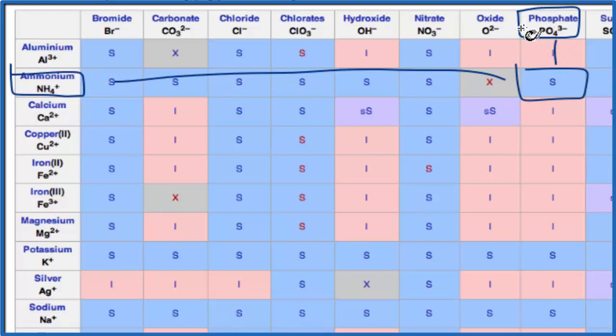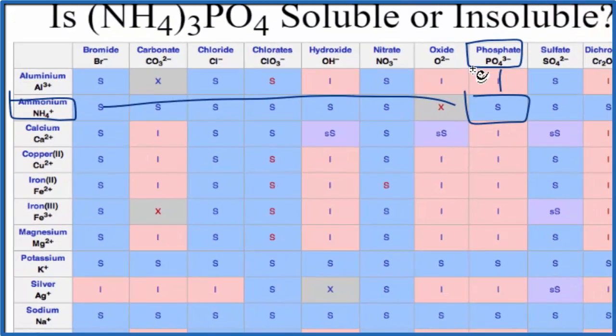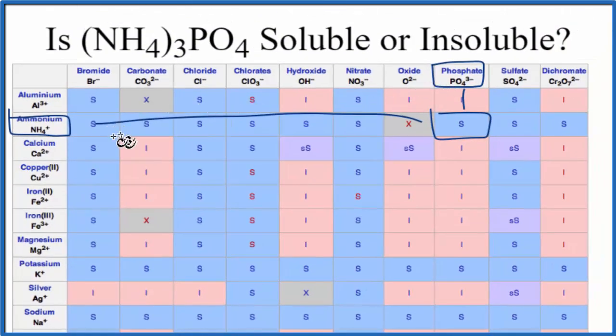And you put it in water, it'll dissolve, break apart into its ions. We say it dissociates. And you'll have the ammonium ion, NH4+, you'll actually have three of them. And then you'll have phosphate, the PO43- ion. And they'll be dissolved in water. They'll be aqueous. You can write a little AQ after them to show that they're dissolved in water.